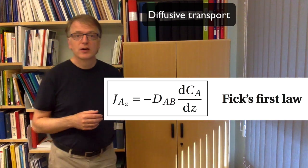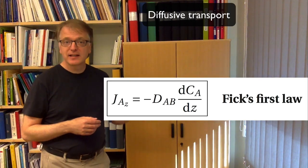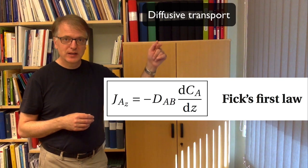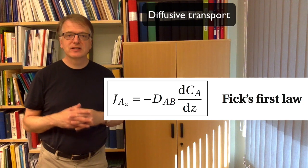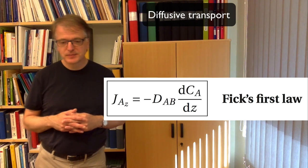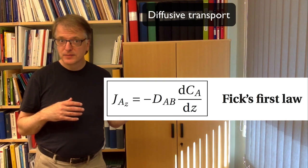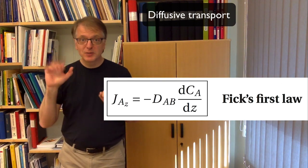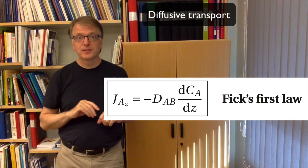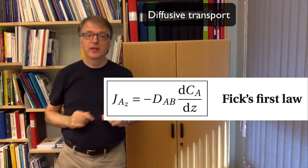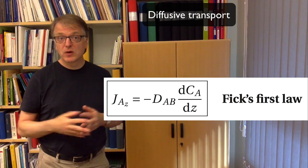We use J here for diffusive flux of A in the z-axis direction, and we take the derivative of concentration with respect to that direction, the z-axis direction. And there is a minus sign there. And that minus sign is because it moves from high concentration to low, not vice versa. So from high concentration to low, then you get a minus sign there.